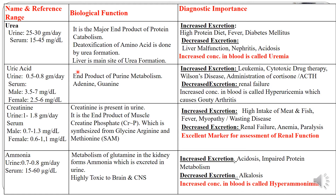Uric acid is also a waste product. It is the end product of purine metabolism — examples of purines are adenine and guanine. Increased excretion of uric acid is seen in leukemia, cytotoxic drug therapy, Wilson's disease, and administration of cortisone. Decreased excretion is seen in renal failure. Whenever there is increased uric acid in blood, the person may have hyperuricemia, which may result in gout.